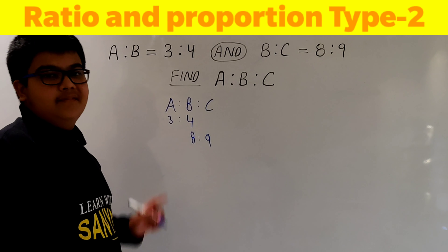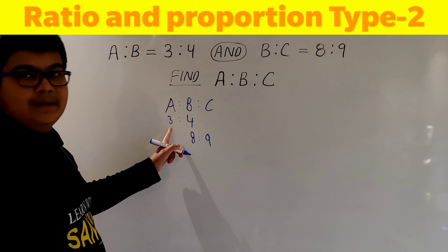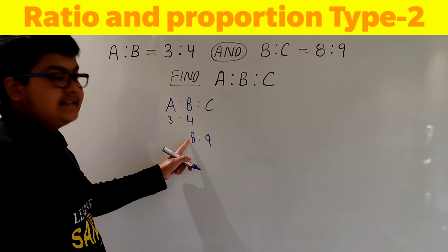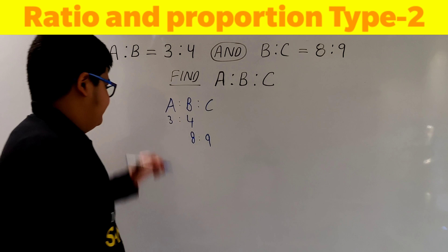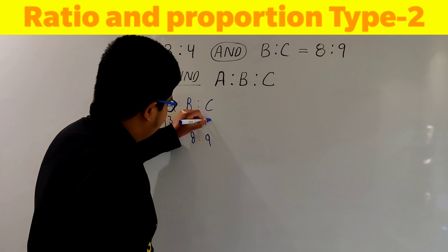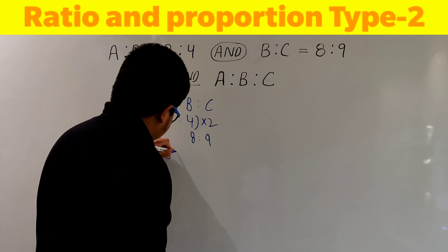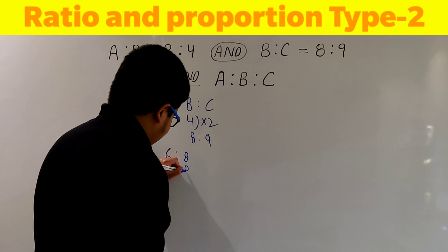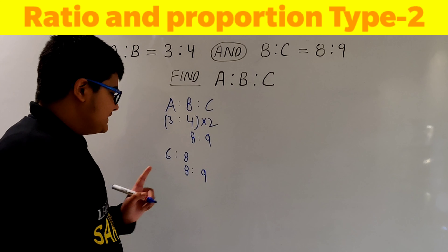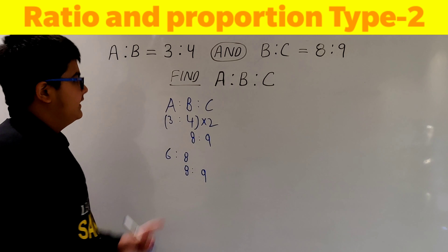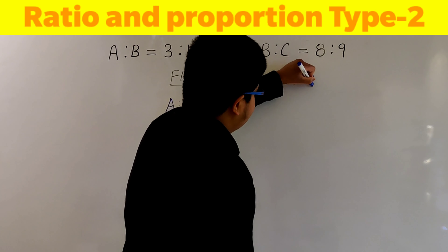What we have to do is make the ratios of B equal. In the first ratio B is 4, and in the second ratio B is 8. We make them equal by multiplying the first ratio by 2, giving us 6:8. The second ratio remains 8:9. Since both values of B are now the same, our final answer is A:B:C = 6:8:9.